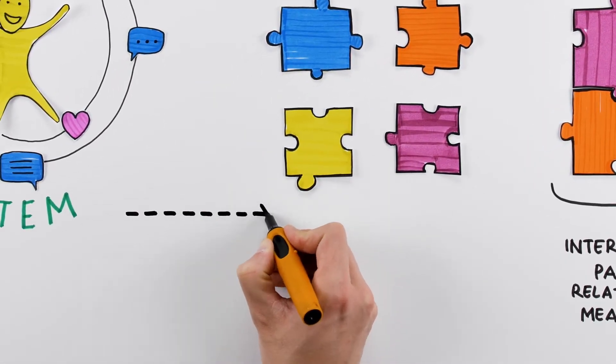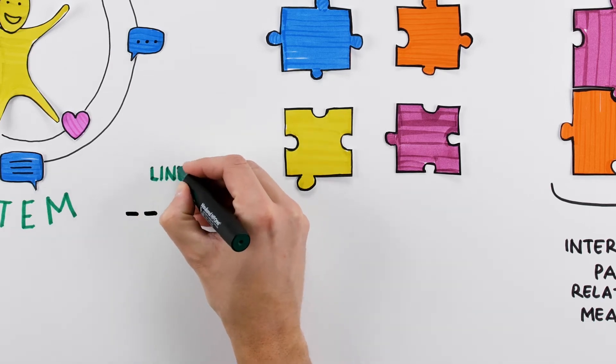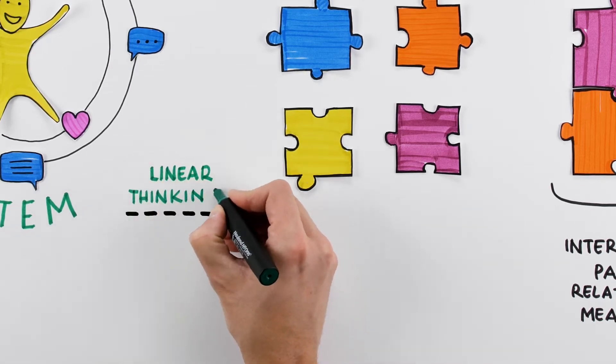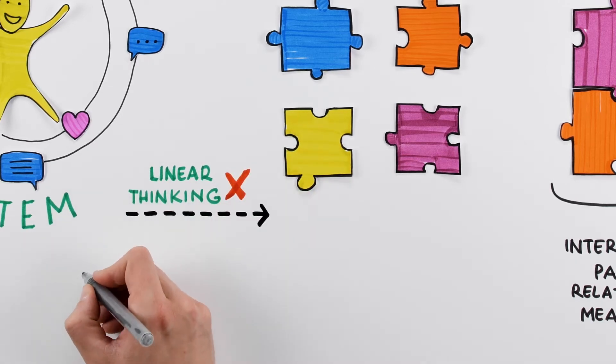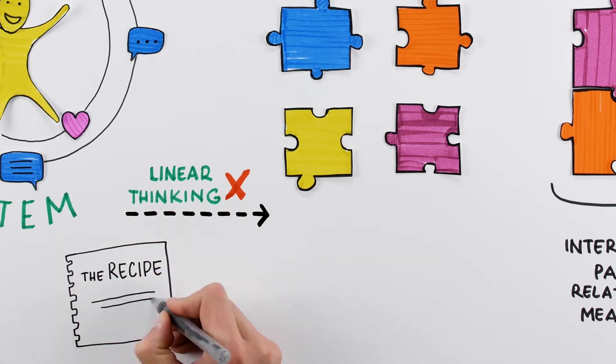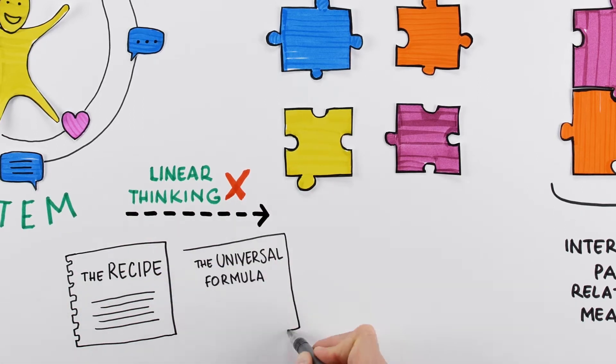Systems thinkers, like Peter Senge, Danella Meadows or Derek Cabrera, believe that linear thinking is not the way to understand complex systems, as this would be like trying to find the recipe for raising a child, or the universal formula for how to do good youth work.